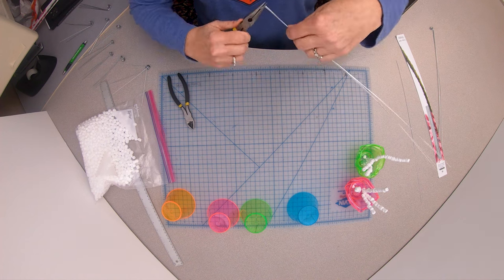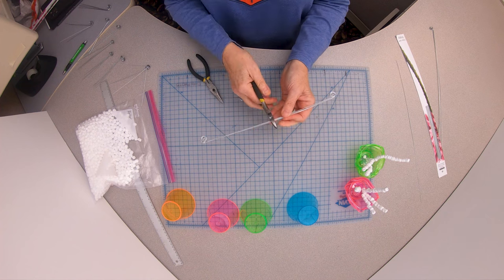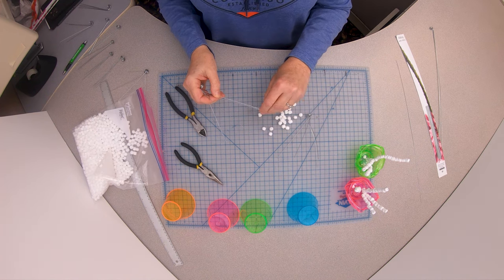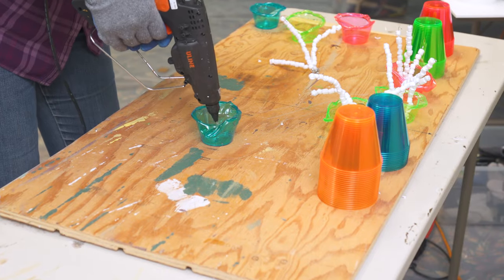Fold two pieces of wire in half and twist the wires to connect at the bends. Then thread the beanbag filling onto the wires and glue the base to the inside of the cup.